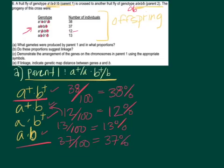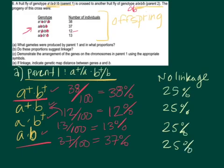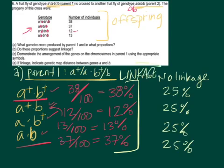So let's move on to question B: do these proportions suggest linkage? No linkage means that parent one should have made each of those combinations in equal amounts — 25% of the time for each combo — to give you the total 100%. But we can see here that each one was not made in equal proportions. Thus we would say yes, these are linked — it suggests linkage.